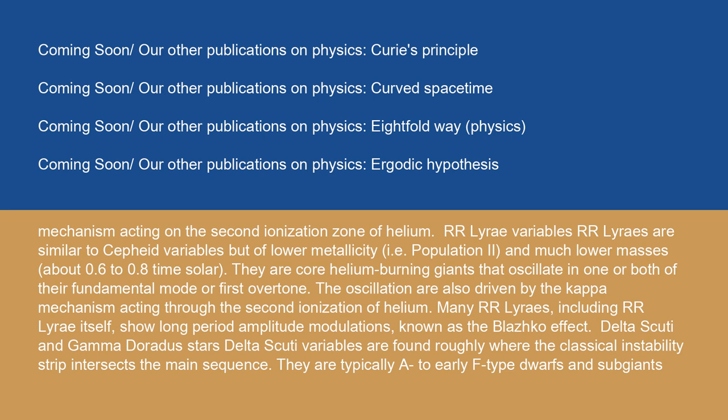Cepheid pulsations are excited by the kappa mechanism acting on the second ionization zone of helium. RR Lyrae variables are similar to Cepheid variables, but of lower metallicity (i.e. population 2) and much lower masses, about 0.6 to 0.8 times solar. They are core helium-burning giants that oscillate in one or both of their fundamental mode or first overtone. The oscillations are also driven by the kappa mechanism acting through the second ionization of helium. Many RR Lyraes, including RR Lyrae itself, show long-period amplitude modulations known as the Blazhko effect.